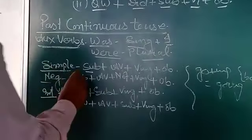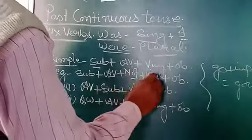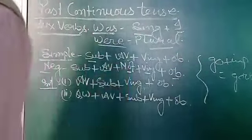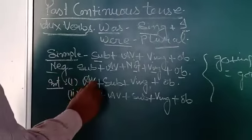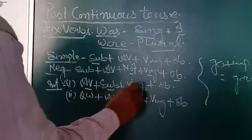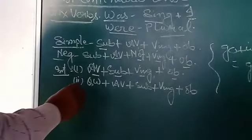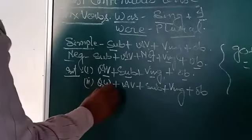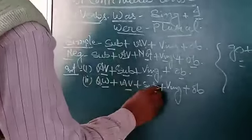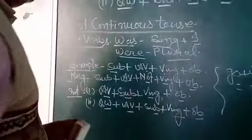In negative: subject, auxiliary verb, 'not,' verb ing form plus object. In interrogative — first type: auxiliary verb, subject, verb ing form plus object. Second type: question word, auxiliary verb, then subject, then verb ing form plus object.